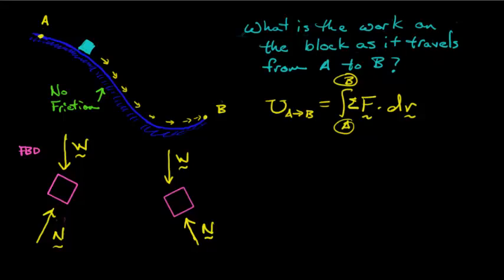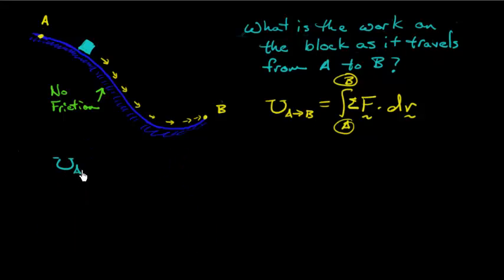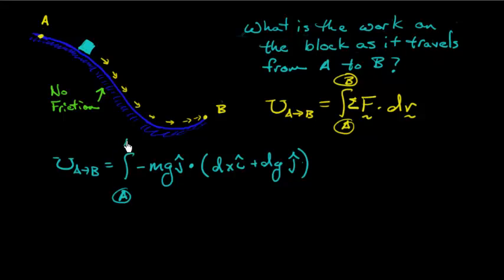Let me clear the screen so we can do some calculations. The work going from A to B, the definition is given up here, but let's now apply it. The force, the only force that performs work is gravity, which is minus mg in the j hat direction. I'm going to take the dot product of that with dr. What is dr? Depending upon where we are, dr has a piece in the x and a piece in the y. Let me write it very generally: dr is dx in the i direction plus a little dy in the j hat direction. We're integrating from position A to position B.